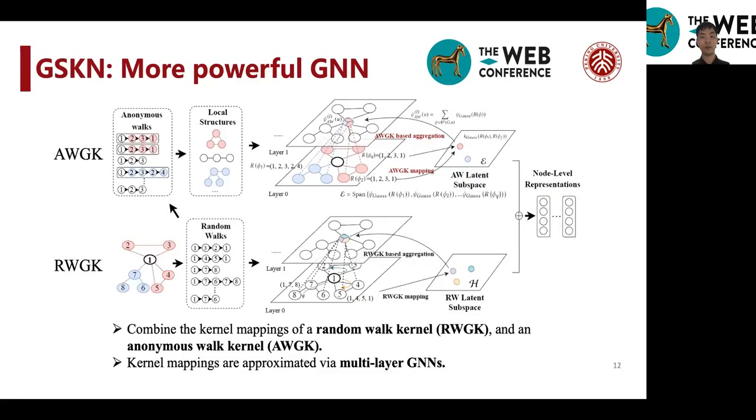And here is an overview about our model GSKN. Basically, GSKN combines two kernel mappings, two graph kernel mappings.